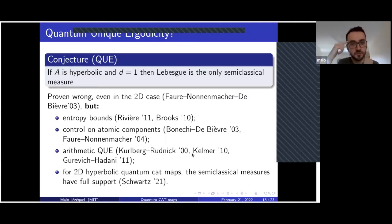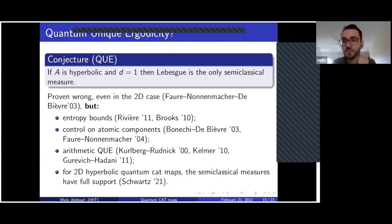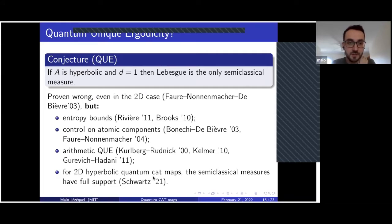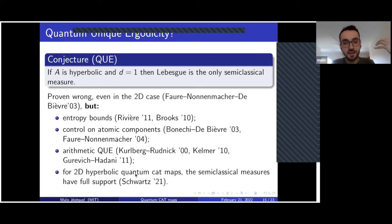You can even get a rate of convergence in that case. There is a higher dimensional version by Kelmer. And finally there is a recent result by Nier-Schwartz saying that if you have a two-dimensional hyperbolic cat map, the associated quantum cat map has only semi-classical measures with full support.